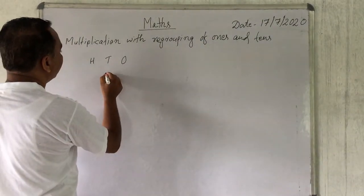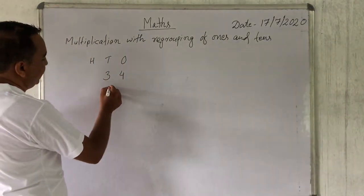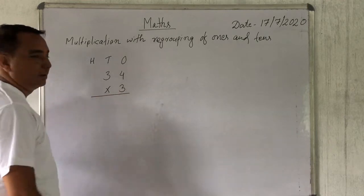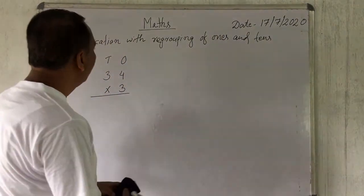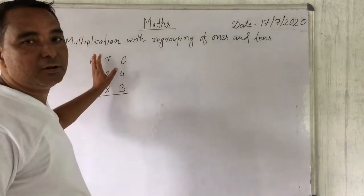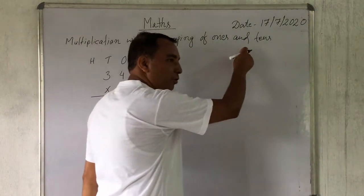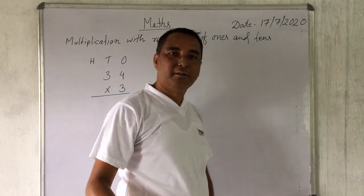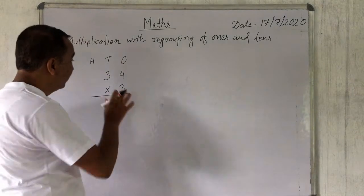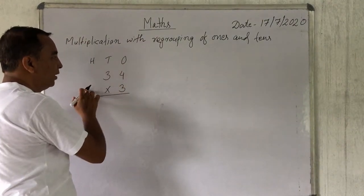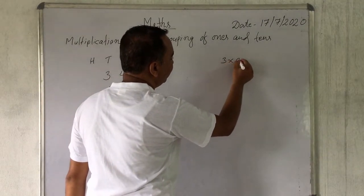Today we are going to do: here is 3 and 4, so the number is 34. We have to multiply 34 by 3. This is our example for regrouping — or we can call it carryover. The most important thing again: we have to know the multiplication table very carefully, because we need it to multiply 34 by 3.